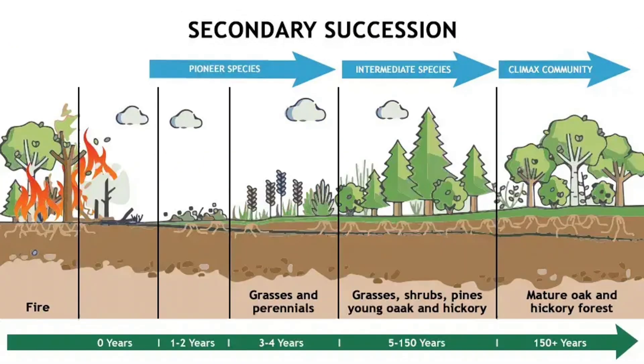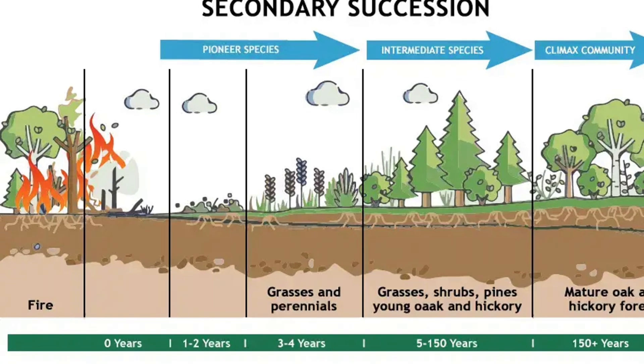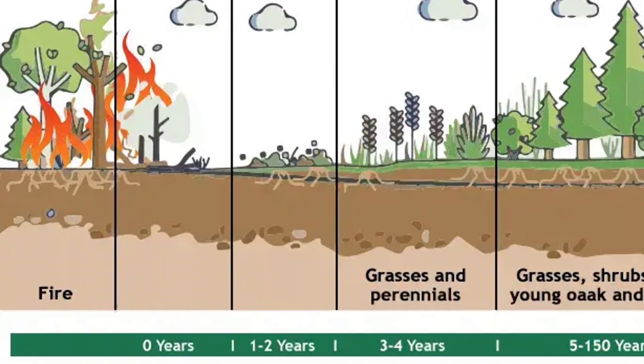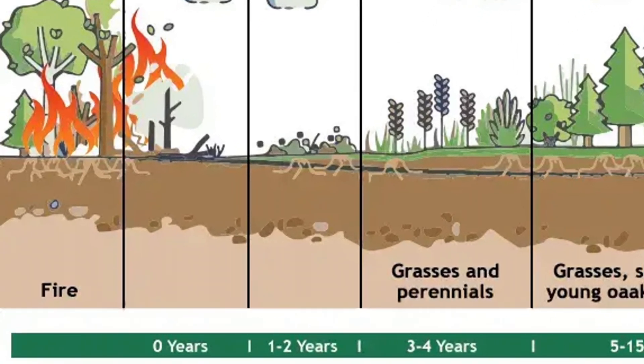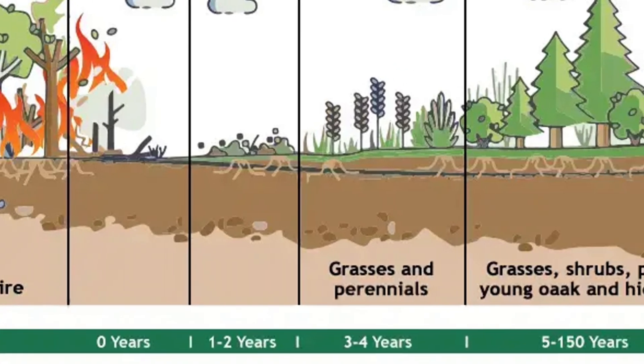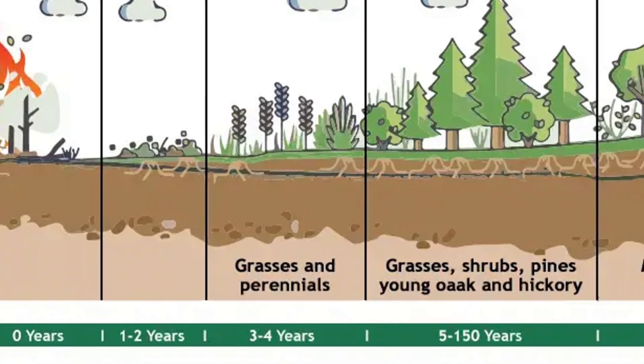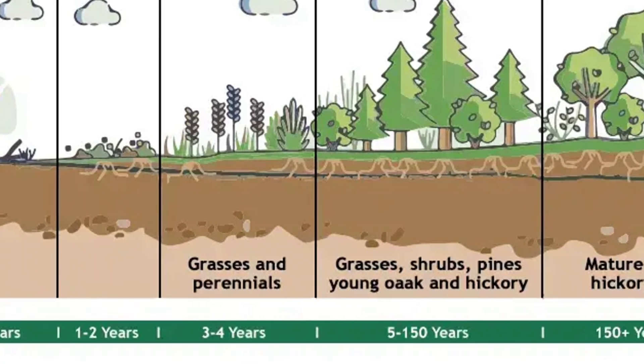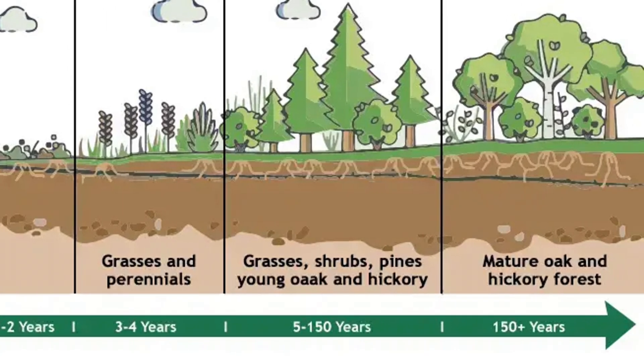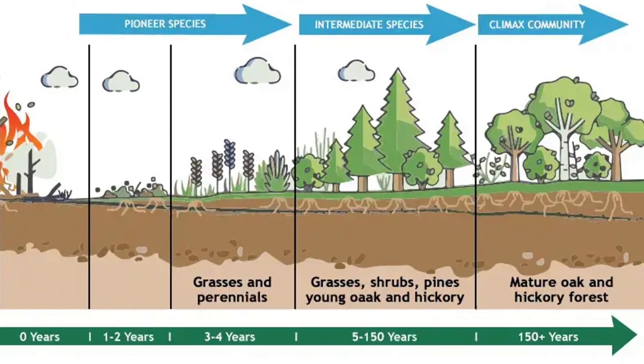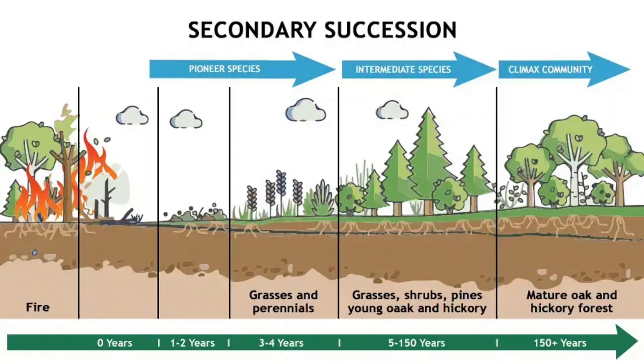In secondary succession, the system usually experiences disasters like floods or fires, but ones that leave the soil intact. So here we simply see grasses moving in first, followed by pretty much everything we saw in primary succession. The important thing to note is that each stage alters the system slightly to make it a little bit more favorable for the next stage of events to occur — not necessarily for the sake of the next organisms, but simply the way that biology plays out.